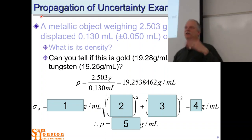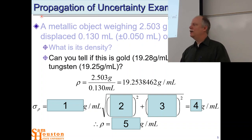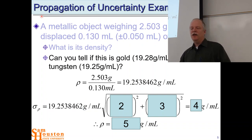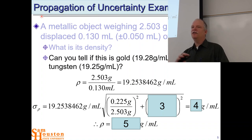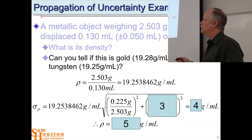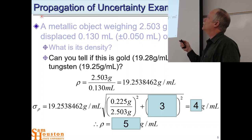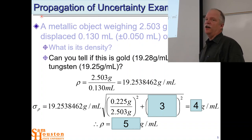This is a multiplication-division problem, so we use the second row in the table — the squared sum of the relative standard deviations of each piece. The uncertainty in our measurement is the measurement times the square root of the squared relative standard deviations of the pieces in the division. This is the RSD for mass: the uncertainty in mass divided by the mass, which we get from the problem by weighing the item two or three times to get a standard deviation. And the second piece is our volume: 0.05 mL divided by 0.13 mL.